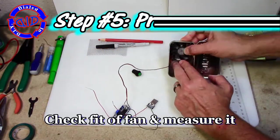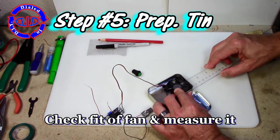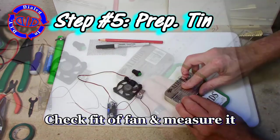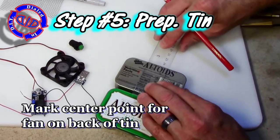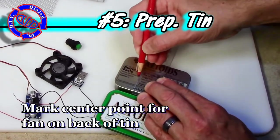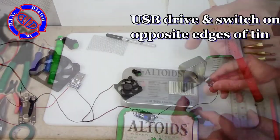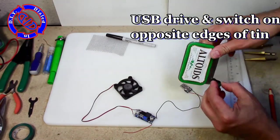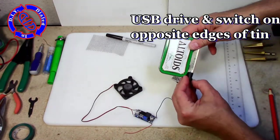Now we're ready to grab the Altoids tin and the fan, check our fit and start taking some measurements. I want to find the distance down to the midpoint on the fan and then transfer that mark onto the back of the tin. I want to put this fan towards the top of one end just to make it the most convenient for the rest of the parts to fit inside.